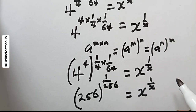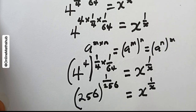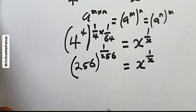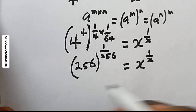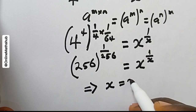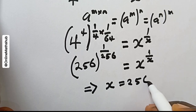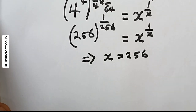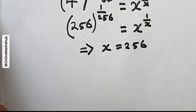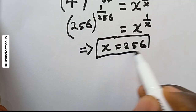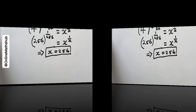At this point we have a similar pattern on both sides of the equation. Comparing both sides directly, it is easy to see that x = 256. You may also want to verify whether x = 256 actually satisfies the original problem.